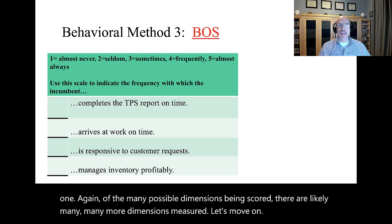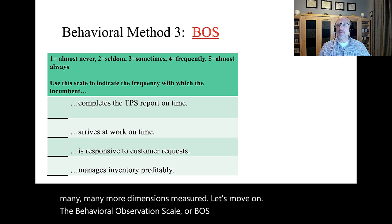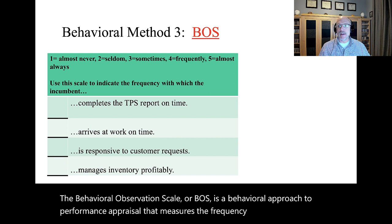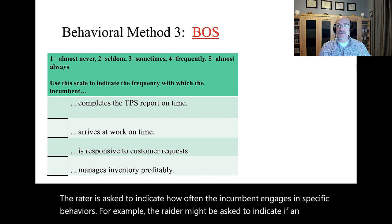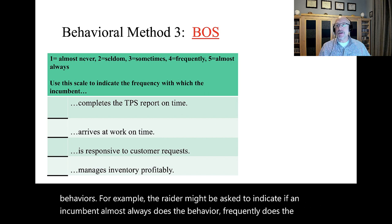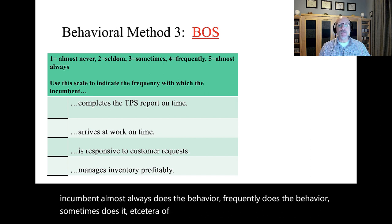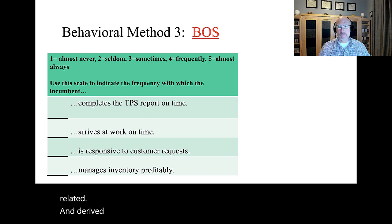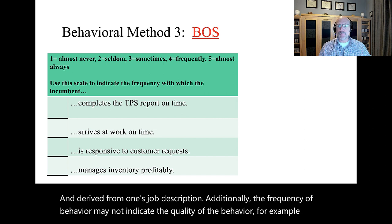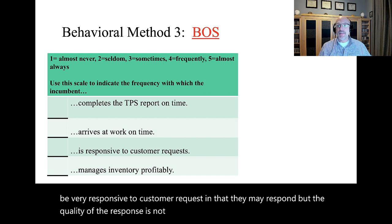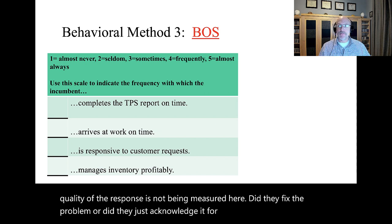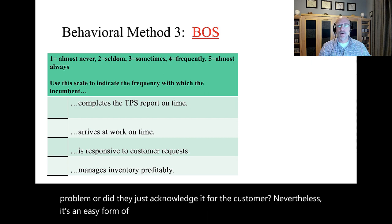The behavioral observation scale, or BOS, is a behavioral approach to performance appraisal that measures the frequency of observed behavior. The rater is asked to indicate how often the incumbent engages in specific behaviors — for example, almost always, frequently, sometimes, etc. These behaviors must be job-related and derived from one's job description. Additionally, the frequency of behavior may not indicate the quality of the behavior. For example, one can be very responsive to customer requests in that they may respond, but the quality of the response is not being measured. Nevertheless, it's an easy form of performance appraisal to use.